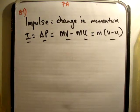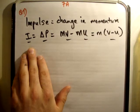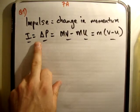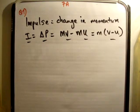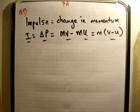So we know that the impulse is equal to the change in momentum. We'll say I, it's a vector quantity, is equal to delta P. Delta, the Greek letter delta, means change. So it's mass times velocity minus mass times velocity, or m times v minus u.